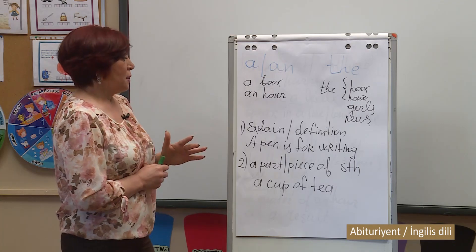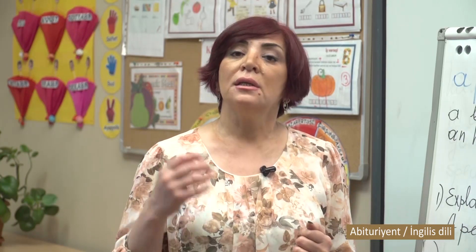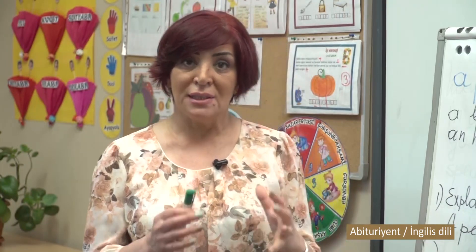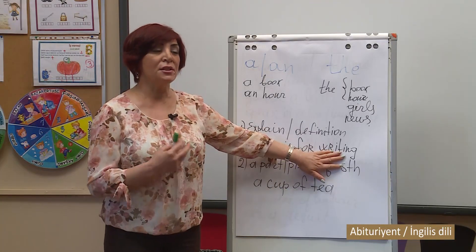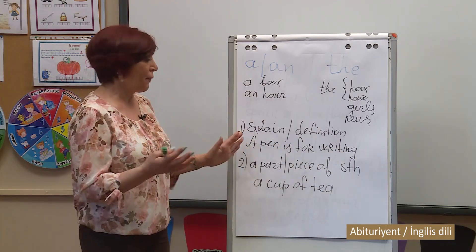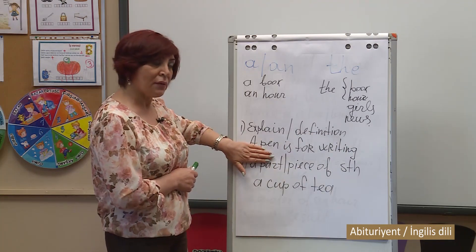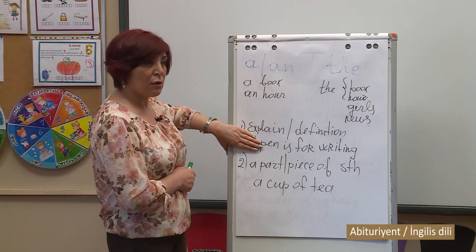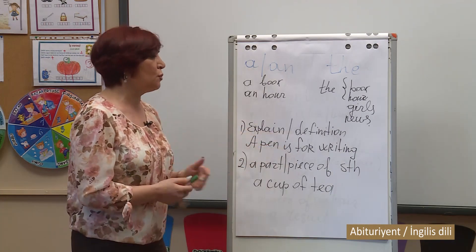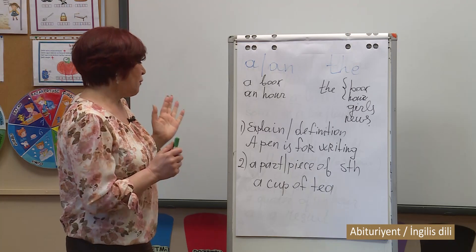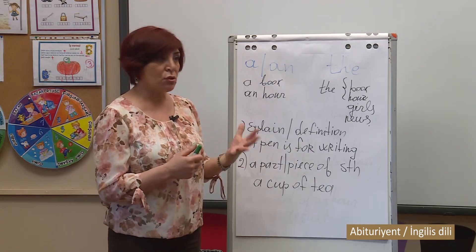When we start explaining or giving the definition of any noun, we use the indefinite article — of course, if it is a countable noun. For example, 'a pen is for writing.' We give the definition of pen; we speak generally. If we use the word 'pen' in plural, no article is used: 'Pens are used for writing.' When we speak about a part or piece of something, for example, 'a cup of tea' or 'a glass of water.'